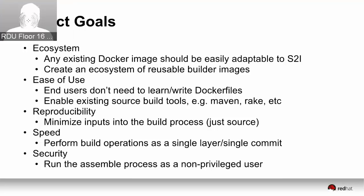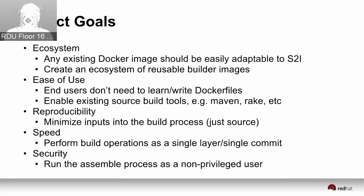We wanted reproducible builds — if somebody is doing iterative changes and pushing to production, we have a reproducible way to say I'm just changing the source and rebuilding on top of the same base image. When you're doing a full Dockerfile, you've got more potential things that might change — a yum install or a download of a Java framework means every Docker build might get something slightly different. Here we minimize inputs by saying: the builder image has the framework; all we're adding is the source. That's the only thing changing when you fix a bug and rebuild.